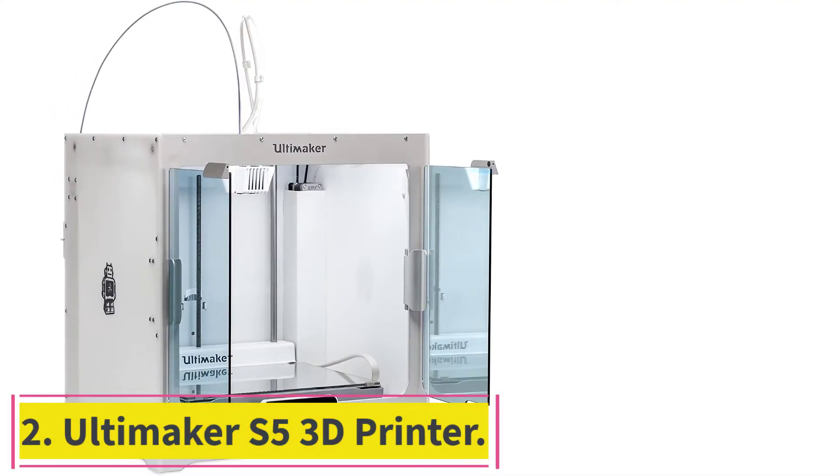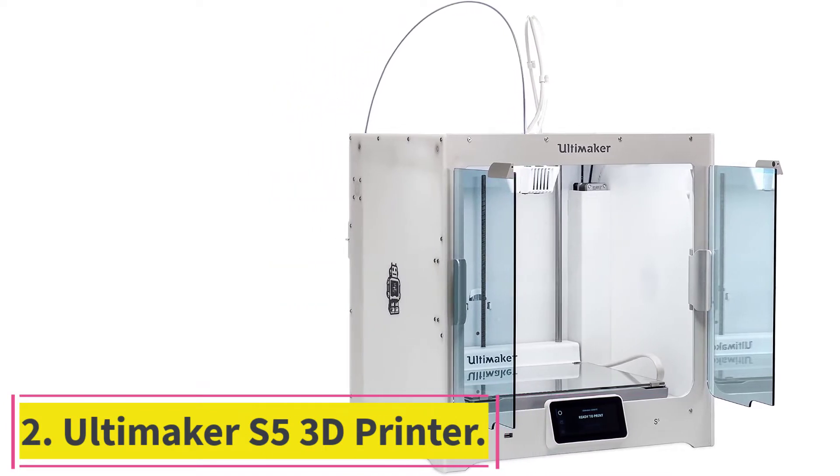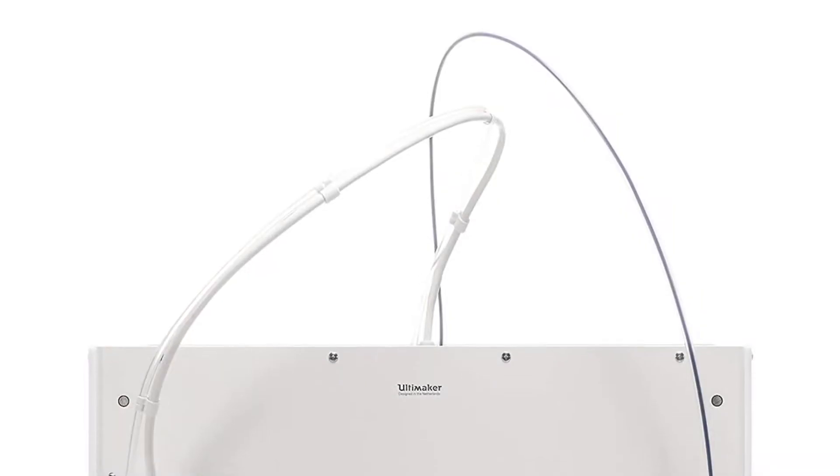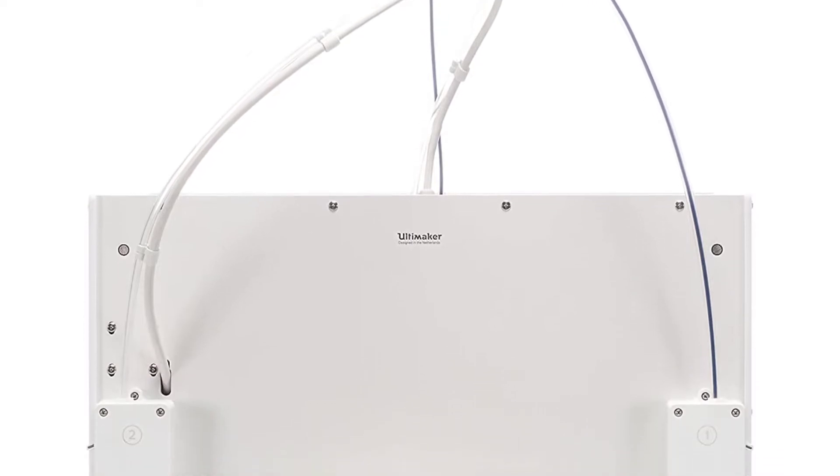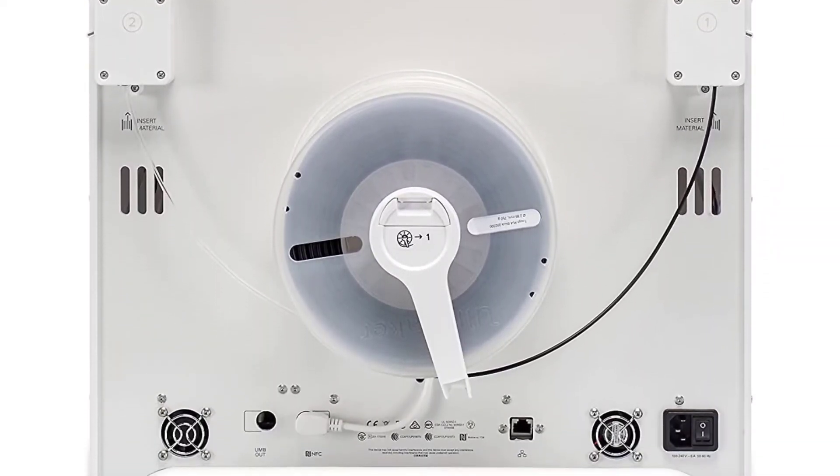Number 2, Ultimaker S5 3D Printer. The Ulti S5 is the latest large-build format 3D printer from the Netherlands-based manufacturer Ultimaker. This printer lets you print larger pieces in increased numbers.